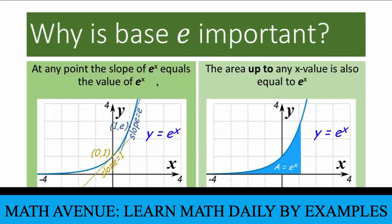Why is the base e important? There are at least two reasons. First, the exponential function y equals e raised to x has the characteristic that at any point, the slope of e raised to x equals the value of e raised to x itself — finding the slope of the tangent line enables us to study the mathematics of change. Also, the area under the curve from the left side to any point x equals e raised to that number. So the derivative of e raised to x equals itself, and the integral of y equals e raised to x also equals itself.